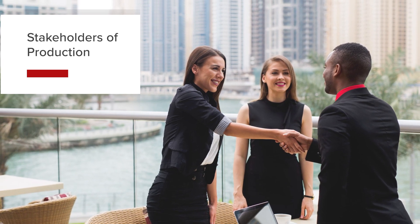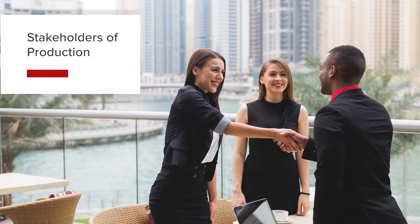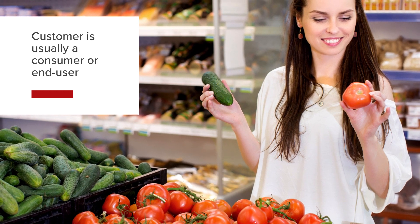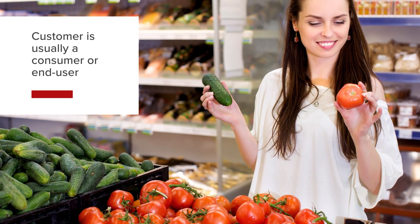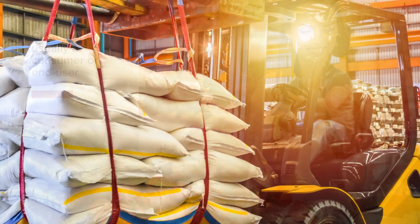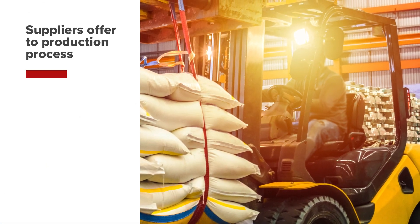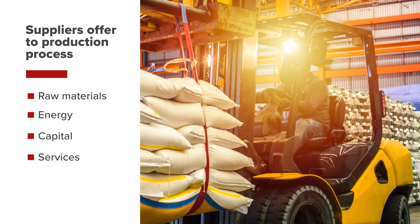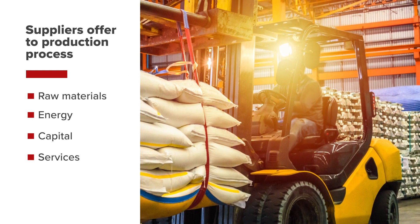Stakeholders can be defined as customers, suppliers and producers. A customer is usually a consumer or end-user; however, the term could include another producer of the same product or a producer supplying the public sector. Suppliers have their own production process and offer to the production process raw materials, energy, capital and services. Producers perform the production process and are comprised of the labour force, owners and those participating in the production process.